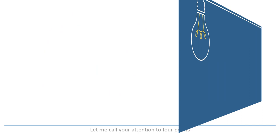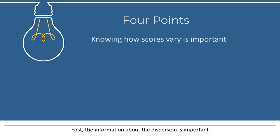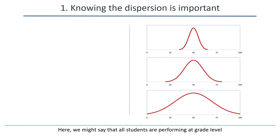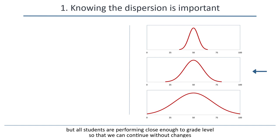Let me call your attention to four points. First, the information about the dispersion is important. The mean is the same in all three cases, but the three cases are obviously very different from each other. Here, we might say that all students are performing at grade level. Here, we might say that there is substantial variation in the scores, but all students are performing close enough to grade level so that we can continue without changes.